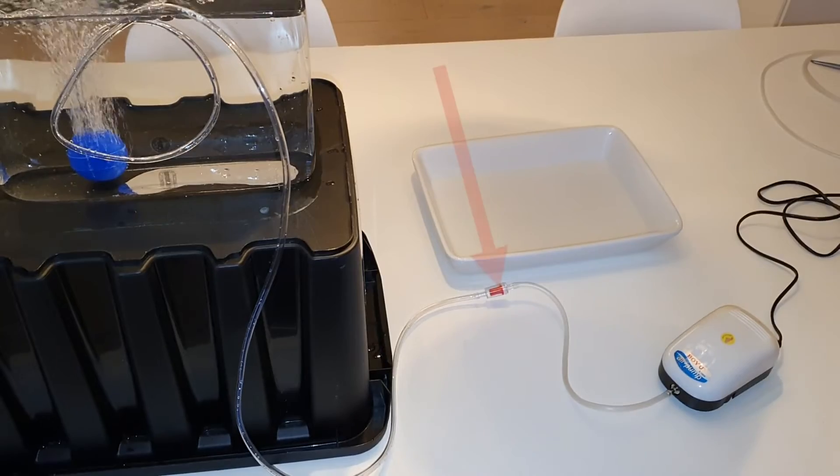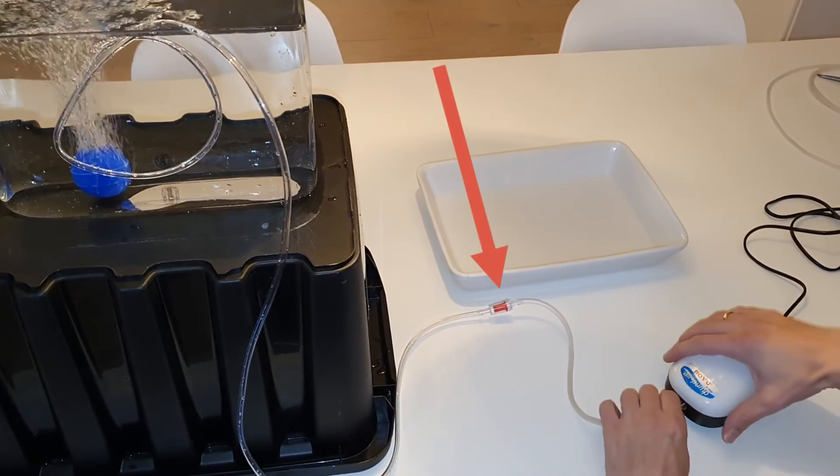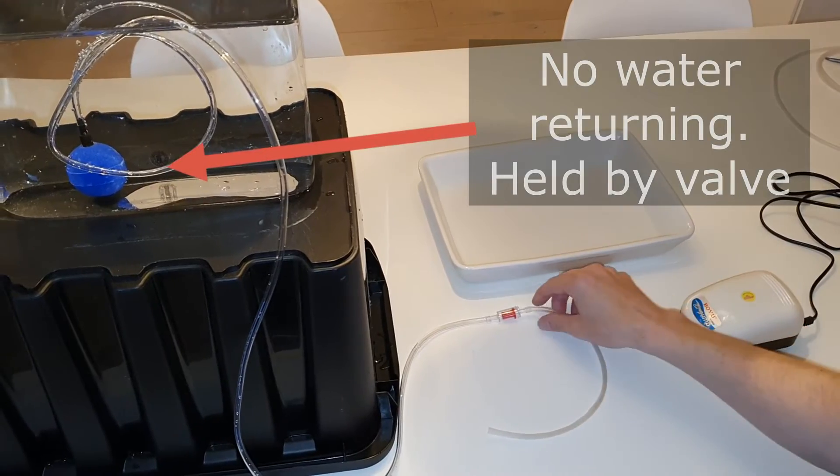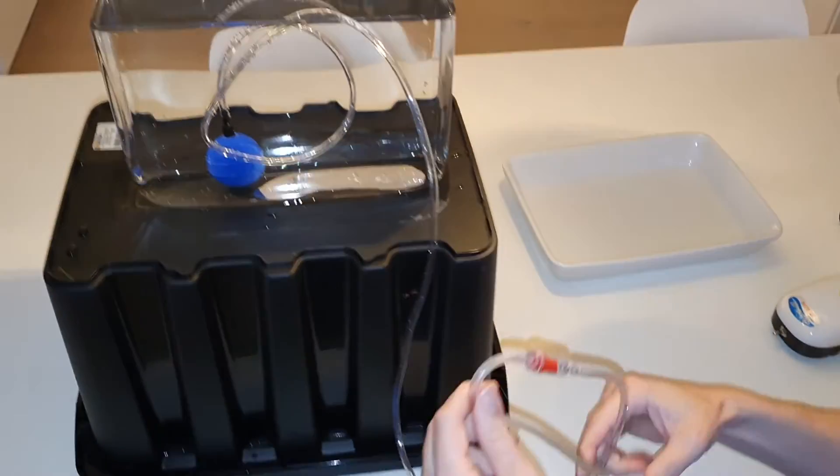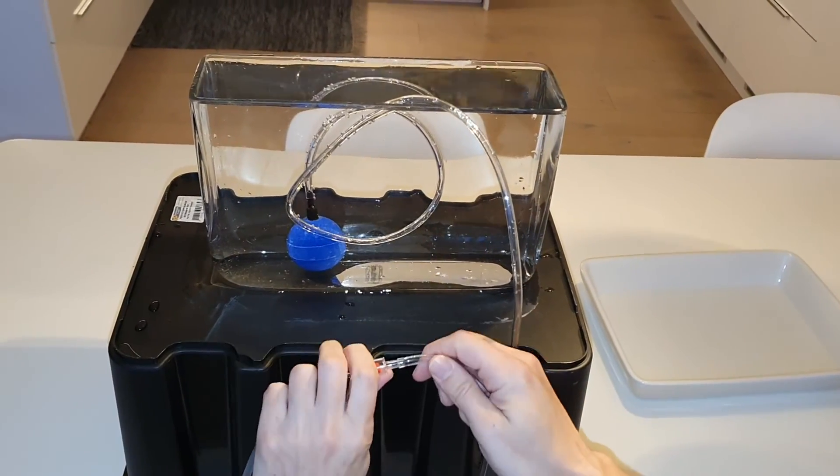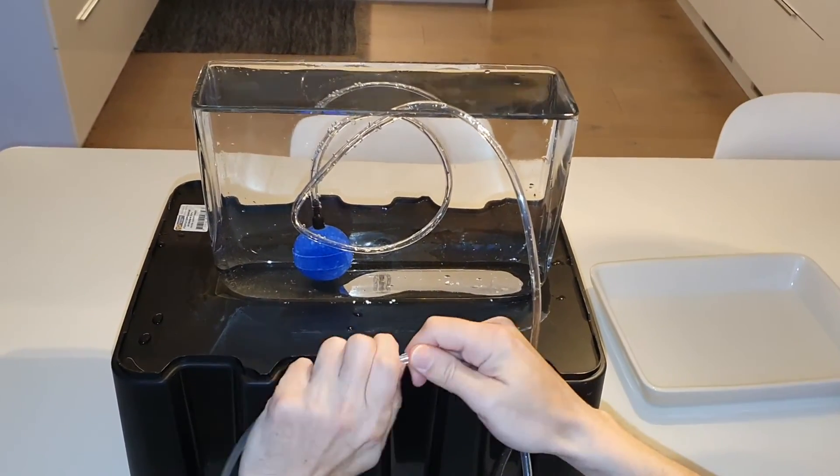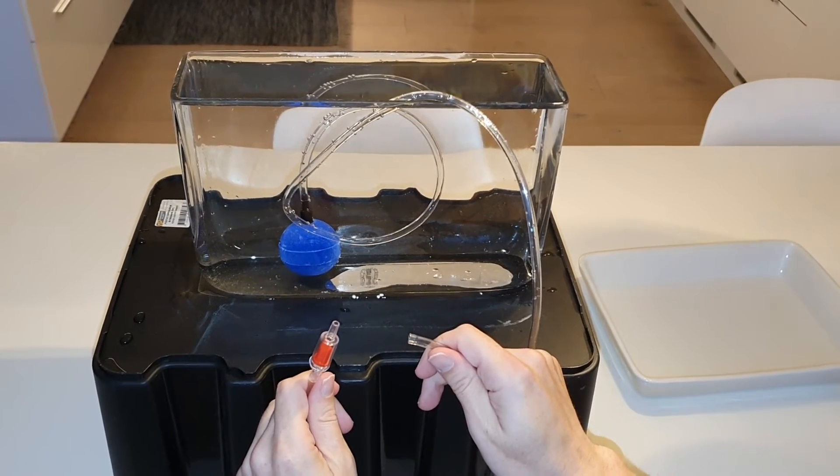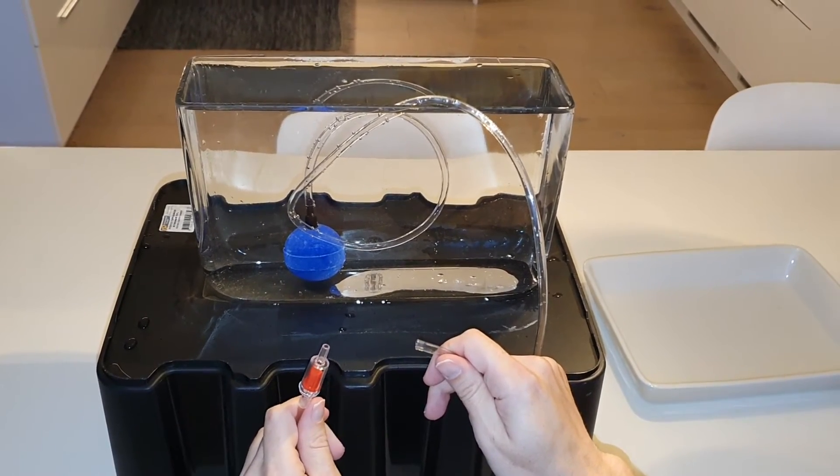Now let's try the same with the check valve connected. We disconnect the pump. As you can see, no water is returning. It is held by the valve. If we disconnect the valve, the water starts flowing back and stops at the surface level.